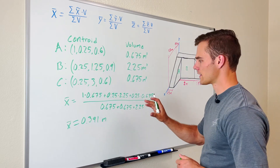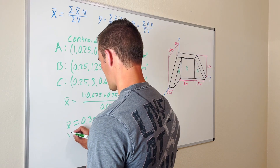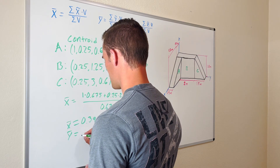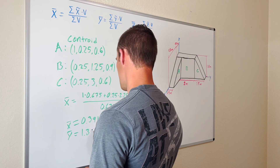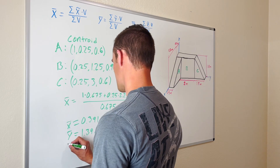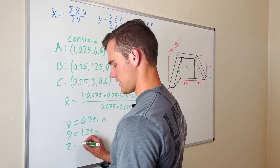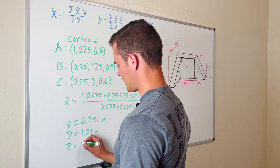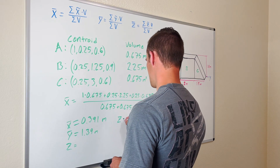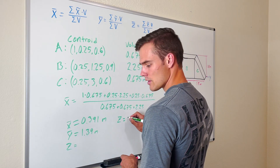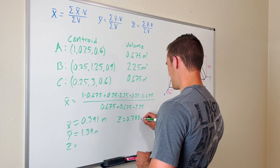The process for finding ȳ and z̄ is very similar, so I'm not going to go through each one separately. ȳ equals 1.39 meters and z̄ equals 0.788 meters.